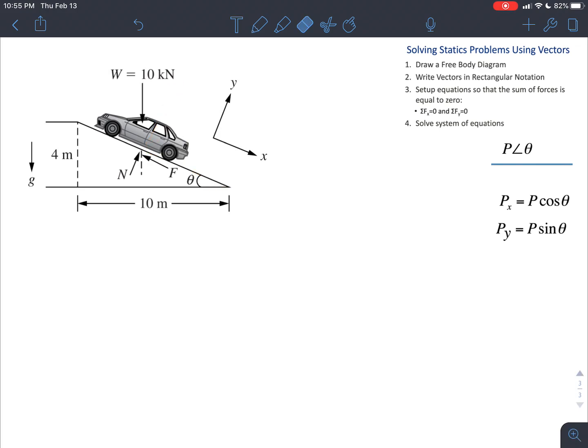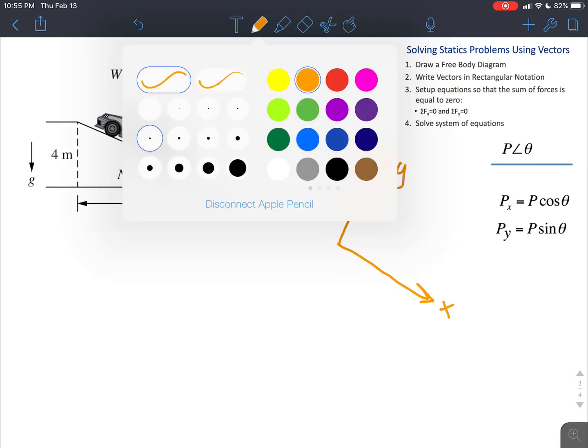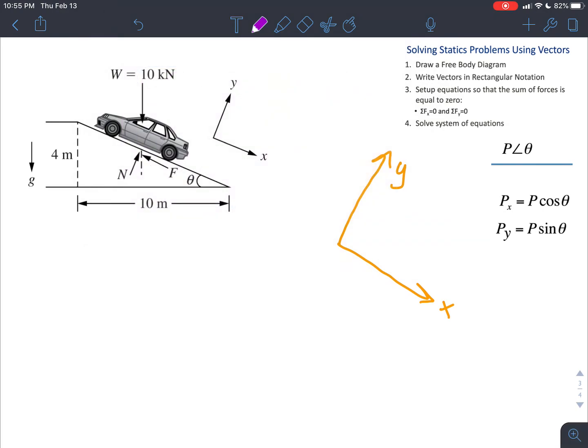And by doing that, it just makes the math a little easier. So if we also do the same thing with our free body diagram, that means that if we draw our axes on our free body diagram, we end up with something that looks like this, where we have this as our x, and this as our y, and now we can draw everything else on the diagram relative to that.